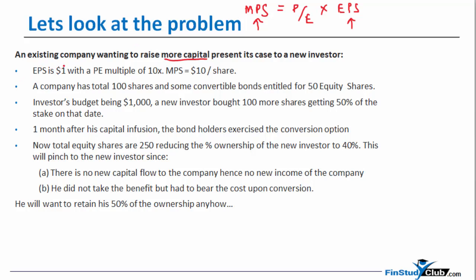The company has a basic EPS of $1. There is a P/E multiple of 10 that the company is commanding — $1 times 10 gives a price of $10. So $10 is the price at which the company is asking the new investor to invest. The investor's total budget is $1,000. So $1,000 divided by $10 means he is able to purchase 100 shares. The company already had 100 shares, so with 100 more, the company now has 200 equity shares.